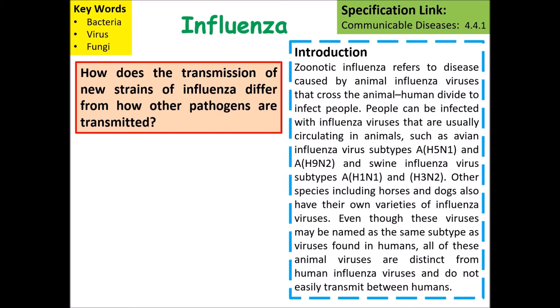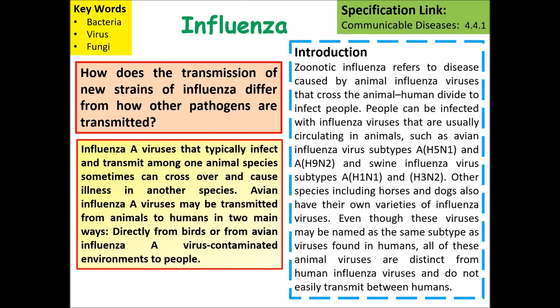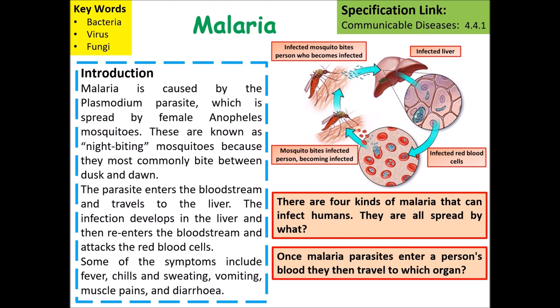How does the transmission of new strains of influenza differ from other past strains? Influenza A viruses typically infect and transmit among animal species but can sometimes cross over to humans. Avian influenza A viruses may be transmitted from animals to humans in two main ways: directly from birds, or from avian influenza A virus-contaminated environments that people may come into contact with.